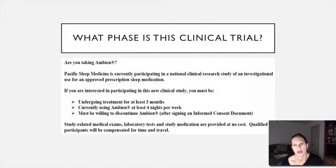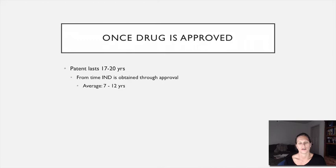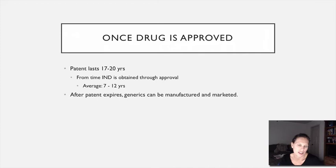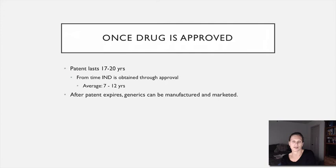Once a drug is approved, the patent business comes into play. A patent lasts usually 17 to 20 years from when the IND is obtained through approval — on average about seven to twelve years. So if it takes ten years, the company has about seven years to make their money back. After the patent expires, any other drug company can manufacture that already-approved drug without going through the whole process, as long as they meet the standard outlined in the USP. Generics must contain all the same active ingredients as the original.